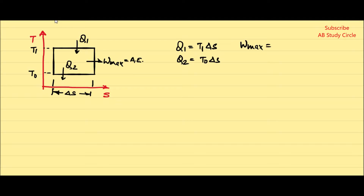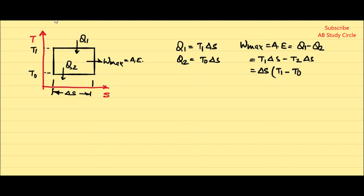According to the first law of thermodynamics, W_max or AE equals Q1 minus Q2, which is T1·ΔS minus T0·ΔS. Taking delta S out, this becomes delta S multiplied by (T1 minus T0). This is the maximum available energy obtained from this reversible cycle.